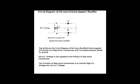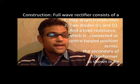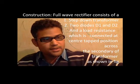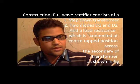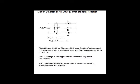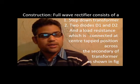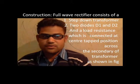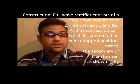The full wave rectifier circuit consists of a step-down transformer, two diodes D1 and D2, and a load connected at the center-tapped position. That is why it is called center-tapped.